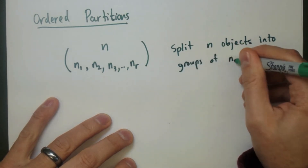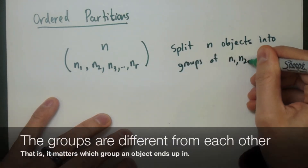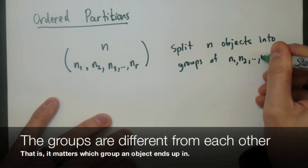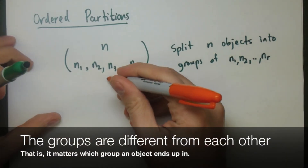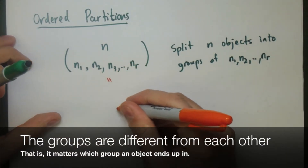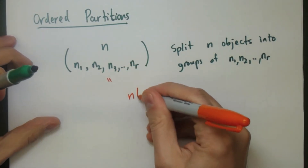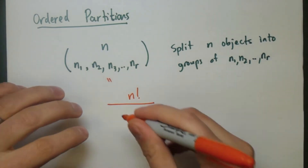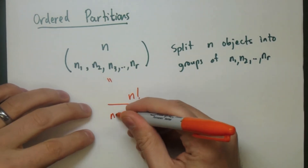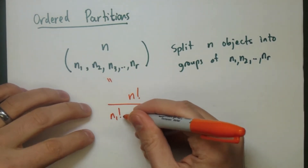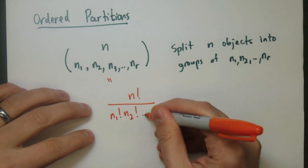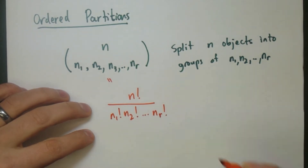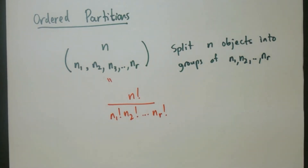The number of ways we can break our set up into these different groups is called the multinomial coefficient, and this is how it looks right here. The formula is the multiplication and division of all the factorials: n factorial over n1 factorial, n2 factorial, all the way up to nr factorial.